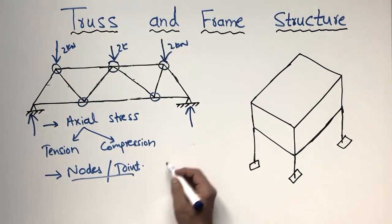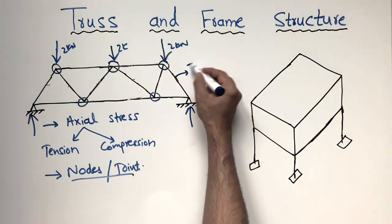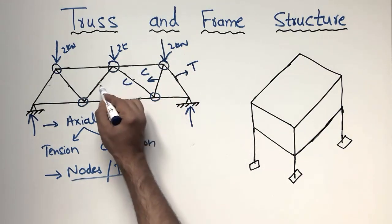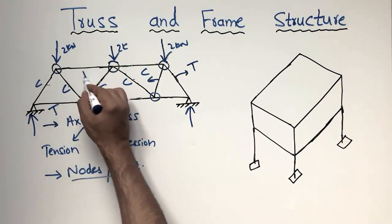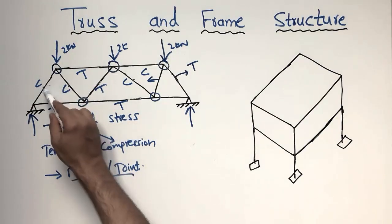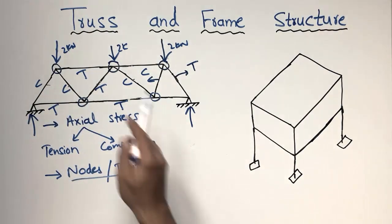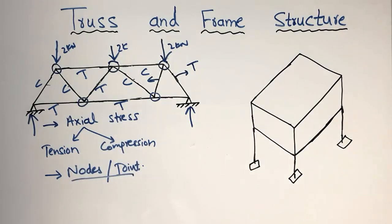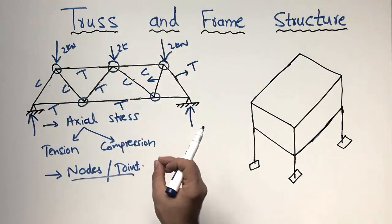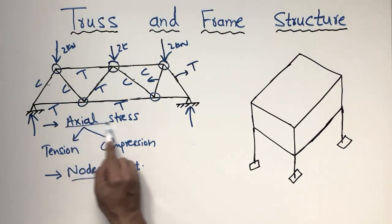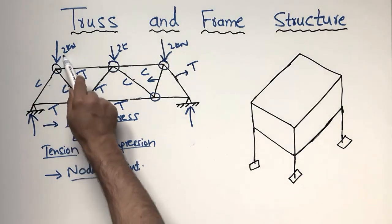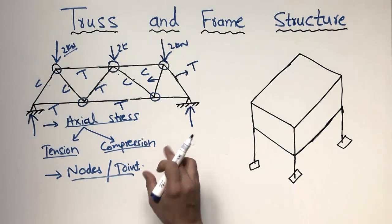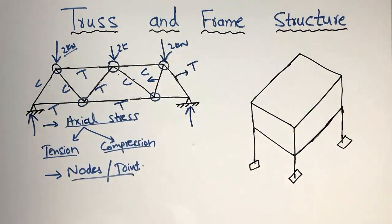After analysis you will get to know which member is in tension and which is in compression. For example, some members are in tension (T) and some are in compression (C). So it means there are no other stresses like bending or shear — only axial stresses, meaning tension or compression, in the truss members. The load will always be applied at the nodes. These are the main properties of the truss structure.